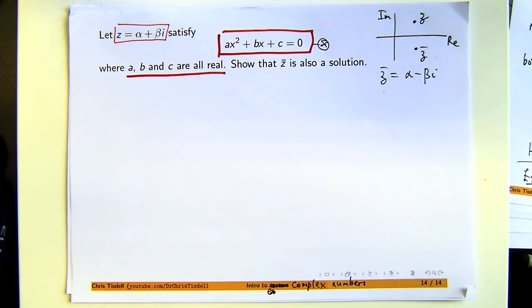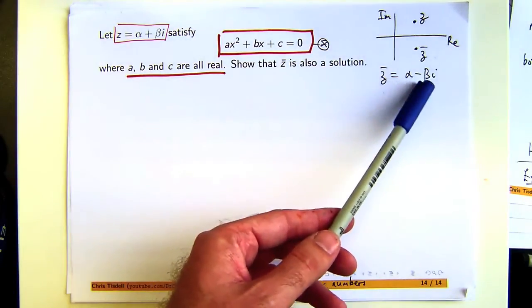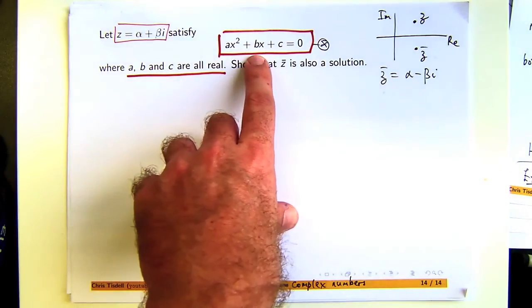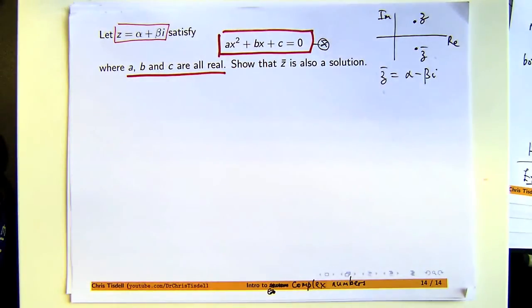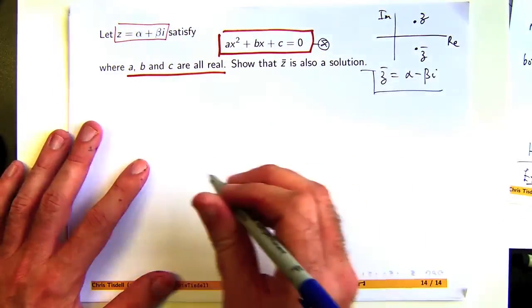There's a couple of ways of doing it. One way would be to actually plug z bar equals alpha minus beta i into here for x and expand it. But that would take a lot of messing around. The easiest and quickest way to do it is just use the conjugate. I'm going to go through it in a bit of detail.